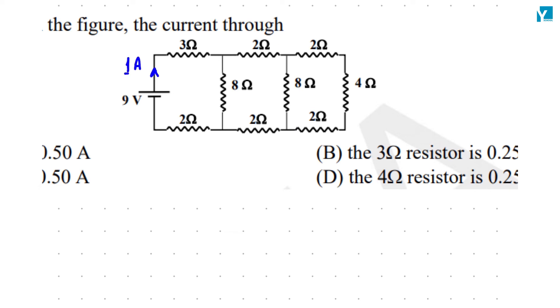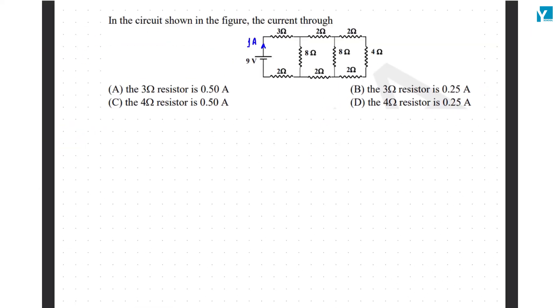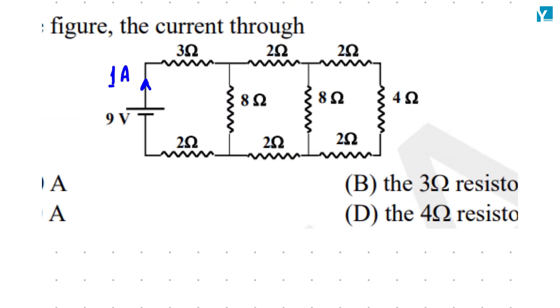So 1 ampere of current has left this location. 1 ampere of current should be available in 3 ohm. Not this option, not this option.